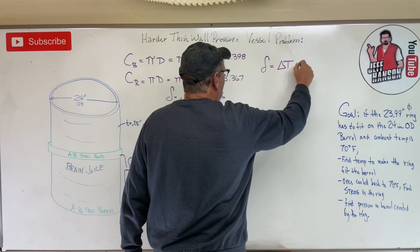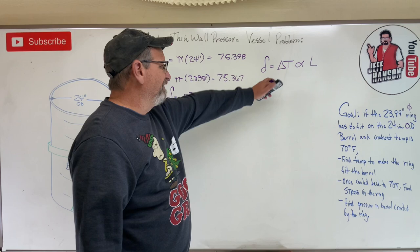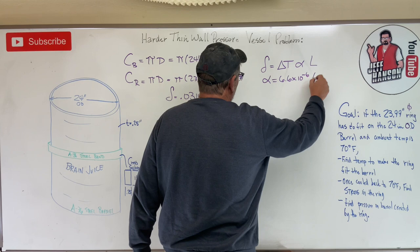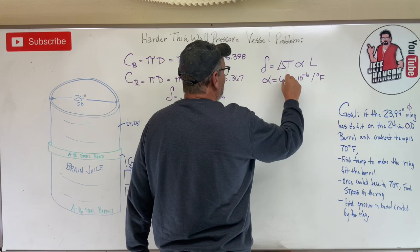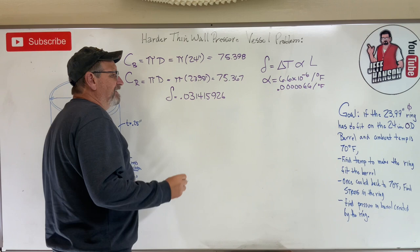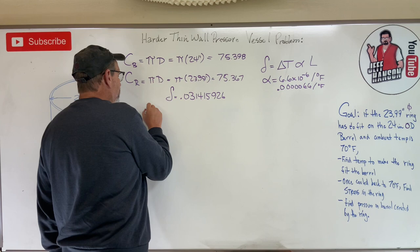What do we need to do? We need delta equals ΔT times α times L. Now we can look up α - that's a look-them-up value. We look it up for A36 steel and α for A36 steel is 6.6 times 10 to the minus 6 per degree F, or move the decimal over six places: 0.00000656 per degree F.